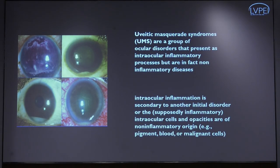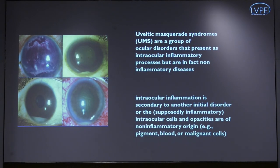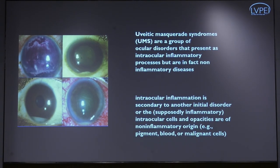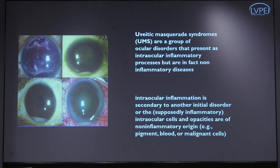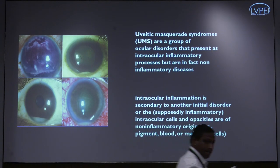So what do we mean by a masquerade? Uveitis masquerade syndromes are a group of disorders that present as an intraocular inflammatory process but are in fact non-inflammatory diseases. The intraocular inflammation here is secondary to another initial disorder.